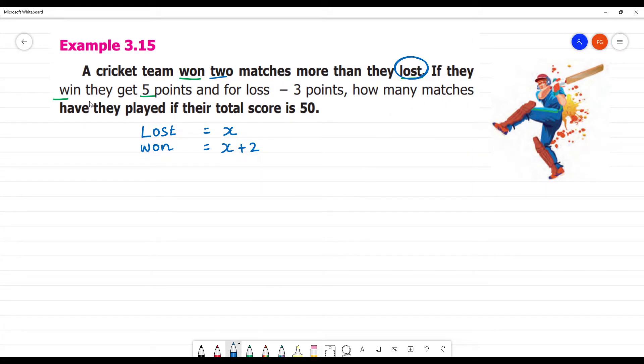If they get five points for win, if they win you have five points. You have minus three points. You will find out that you will find that 50 points.